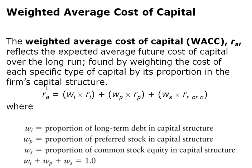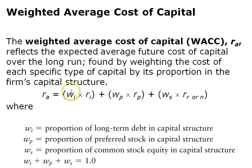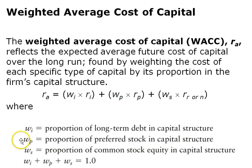Now let's look at how to calculate the weighted average cost of capital (WACC). Similar to the average portfolio return, R_A equals the weight of the first source times its rate, plus the weight of the second source (preferred stock) times its rate, and so on. W_I is the proportion of long-term debt in the capital structure, W_P is the proportion of preferred stock, and W_S is the proportion of common stock—all three must add up to 100%. It is important to convert weights to decimal form.